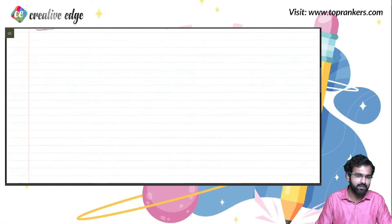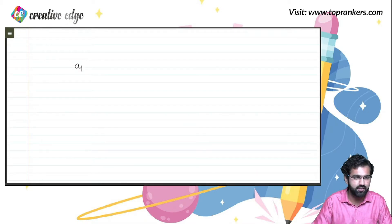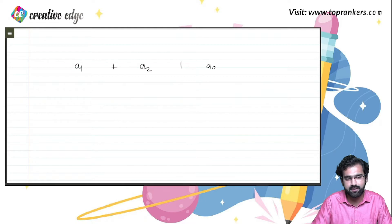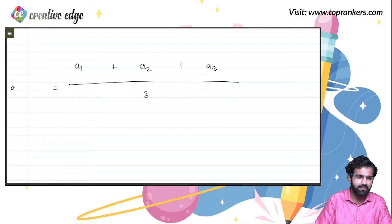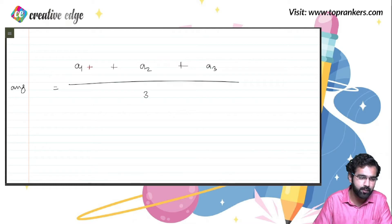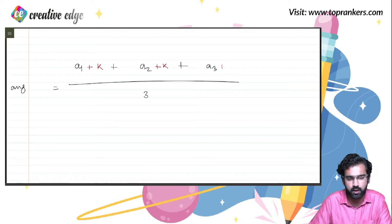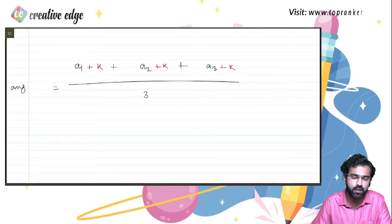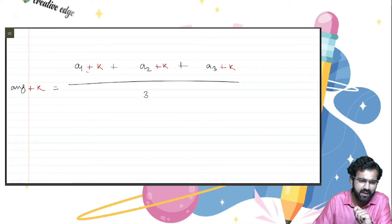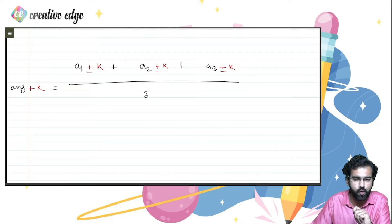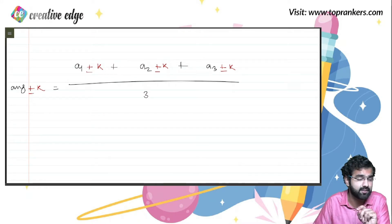One more important statement: if you have observations A1, A2, A3, and you increase all observations by a certain number K — meaning you add K to each observation — the average will also get increased by K. The same holds true for subtraction: if you decrease all observations by a value, the average also decreases by that number.